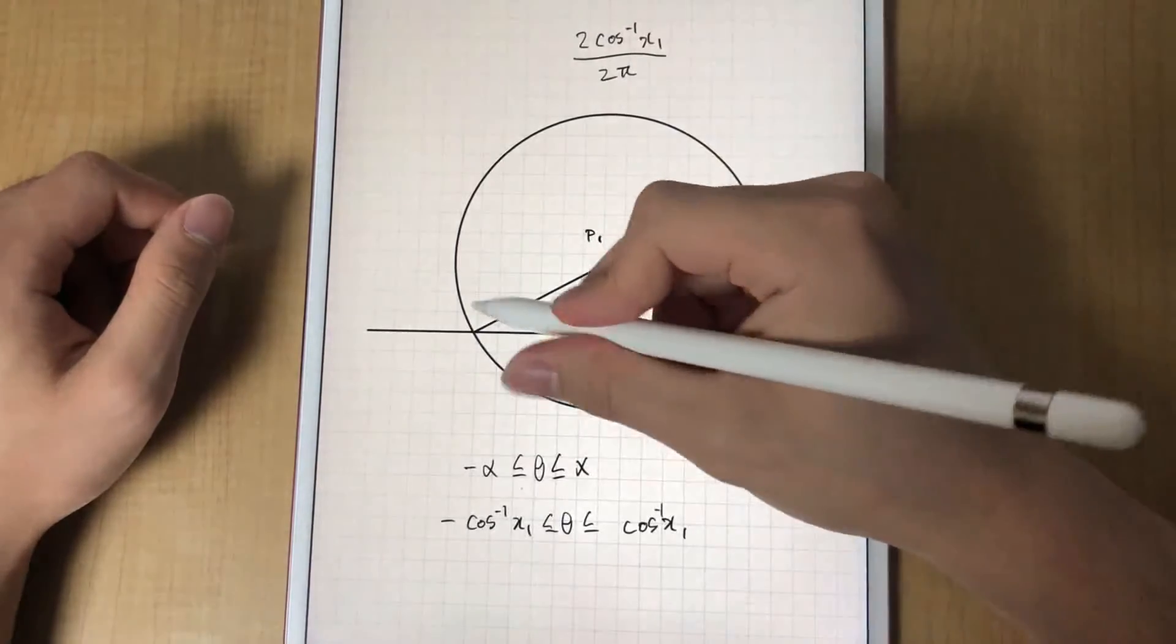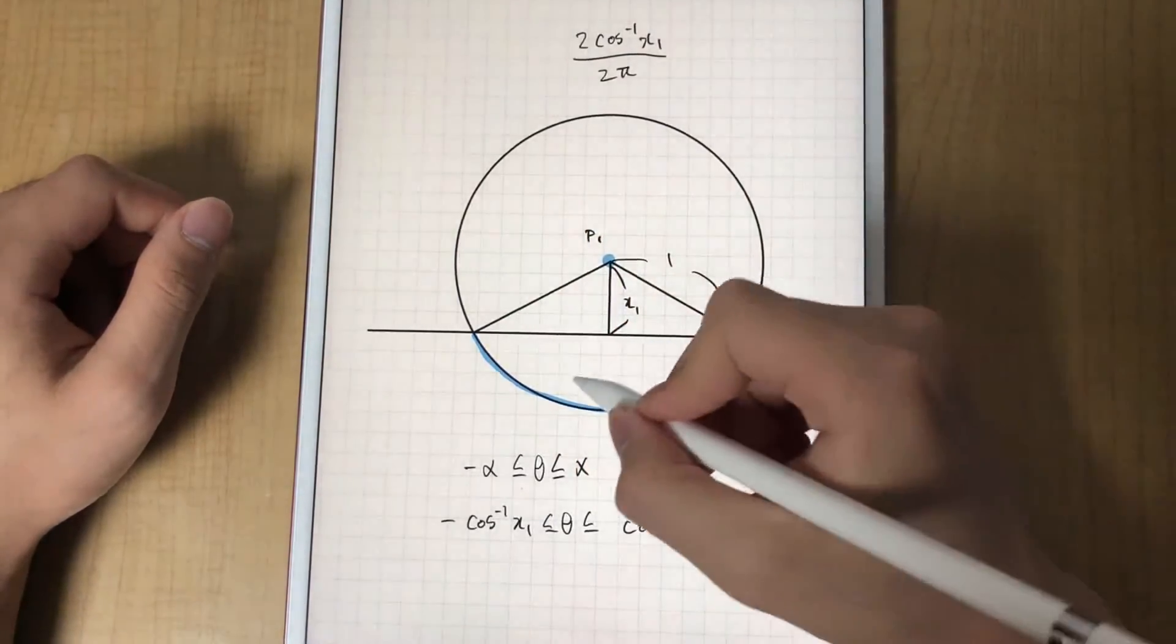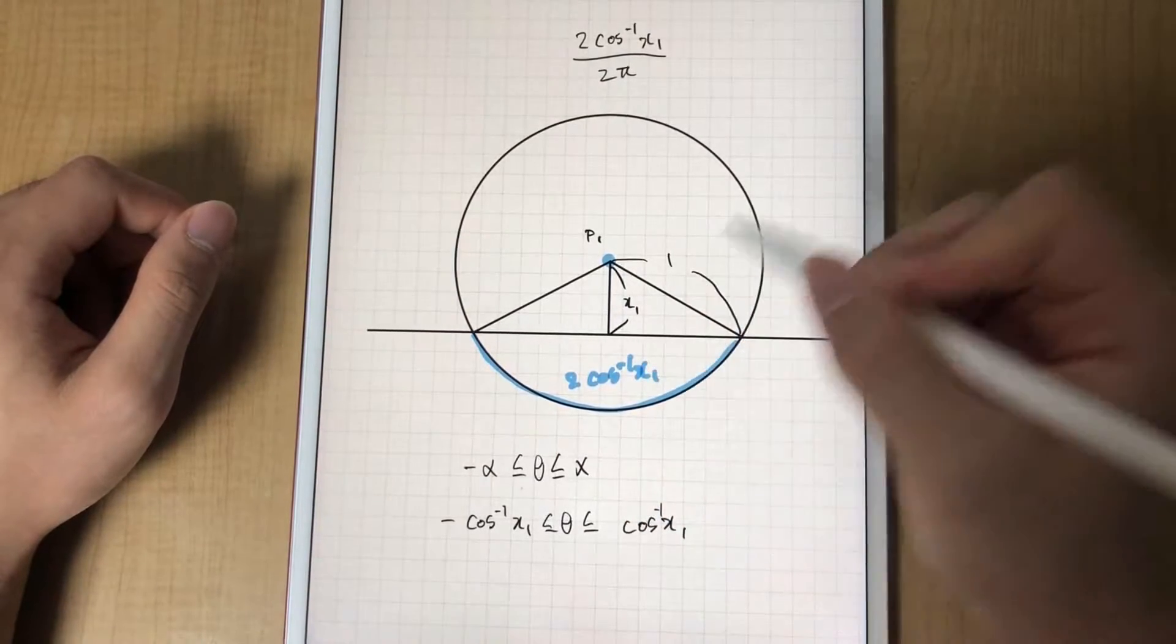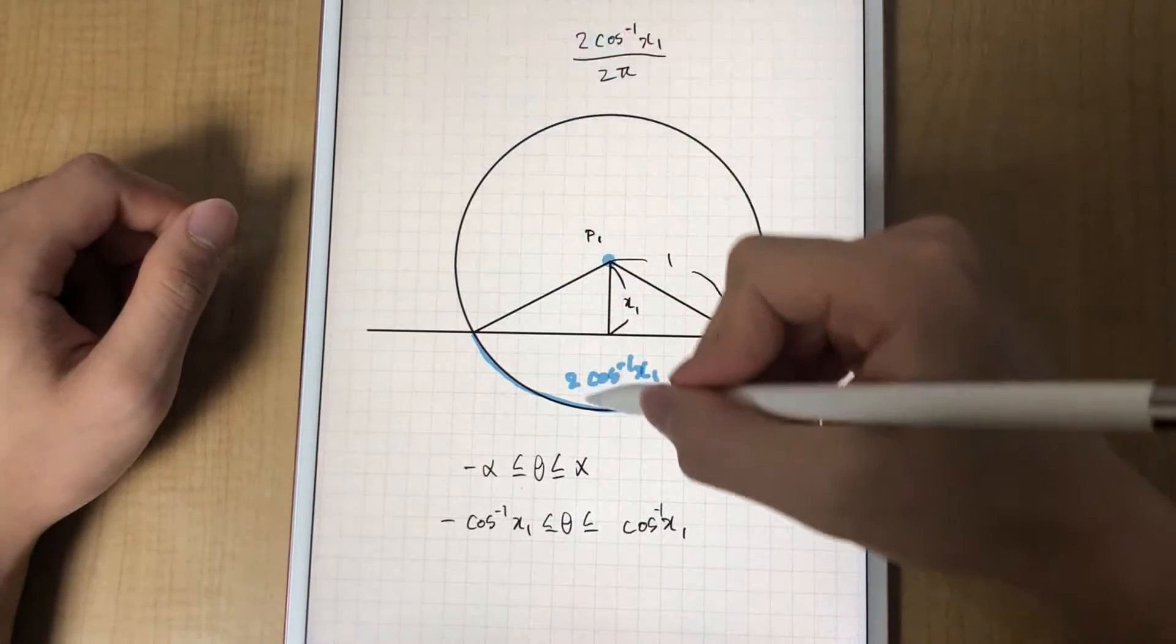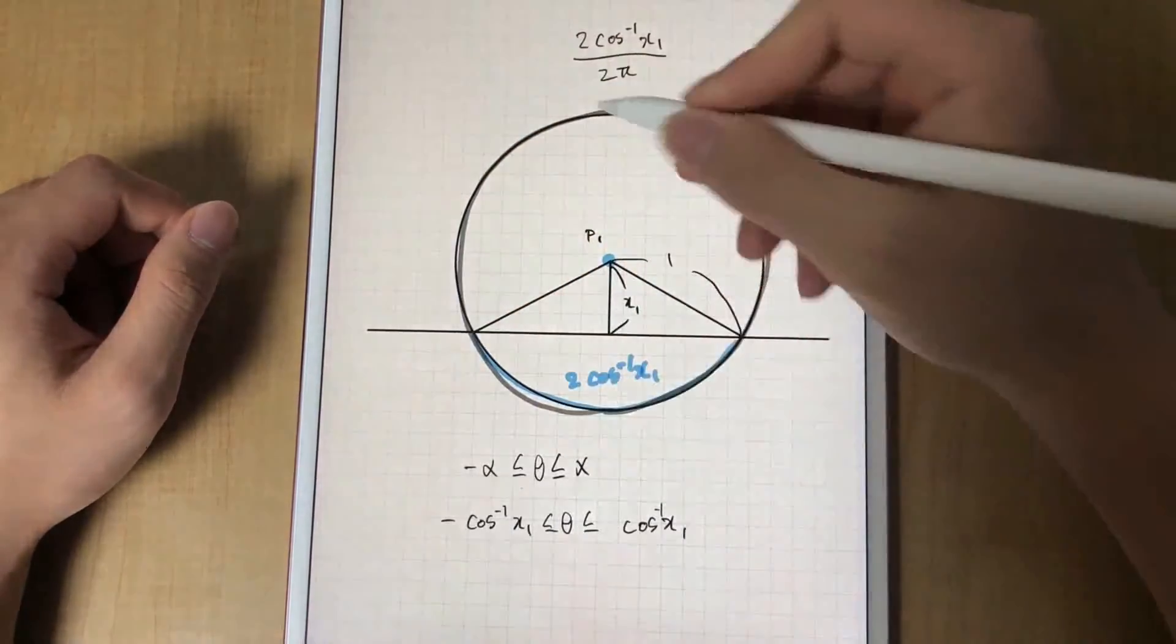As we can see, this is 2 inverse cosine x1 and this is 2 pi.